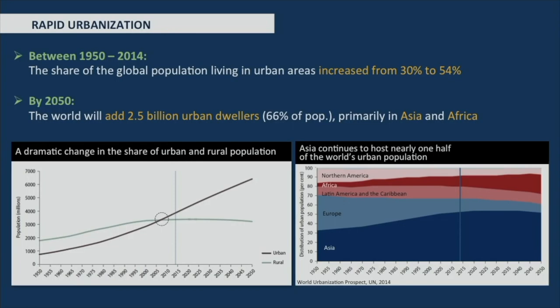As you all know, urbanization is one of the most fundamental trends of the past two centuries. In the last 60 to 70 years, the share of the urban population increased from 30 to 54 percent, and it is expected to reach up to 66 percent by 2050, primarily in Asia and Africa.